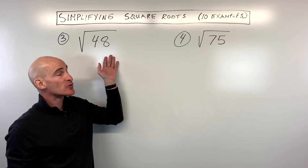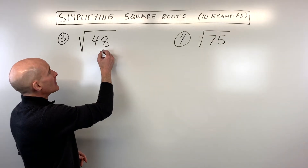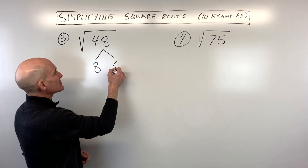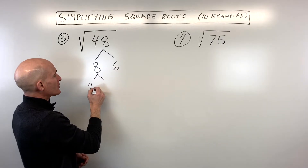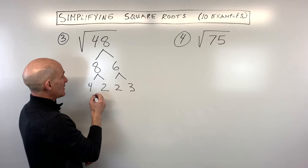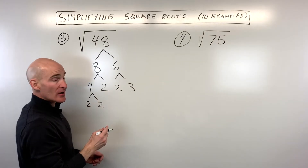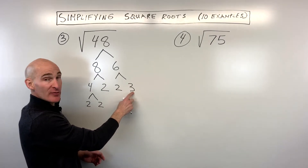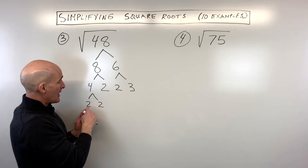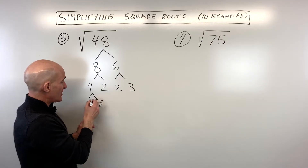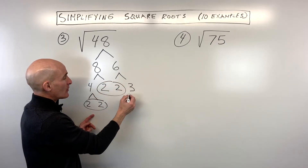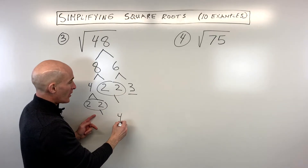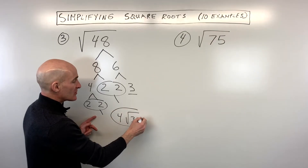For example 3, the square root of 48 — let's break this down into its prime factors. What two numbers multiply to 48? That's 8 times 6. 8 breaks down into 4 times 2, and 6 is 2 times 3. Then this 4 breaks down into 2 times 2. Remember to keep going until you reach prime numbers — for example, 3 can only be divided by 1 and itself. Then look for pairs: here's a pair of 2s, and here's another pair of 2s, with a 3 left over. So we get 2 times 2, which is 4, and √3 stays underneath — giving us 4√3.